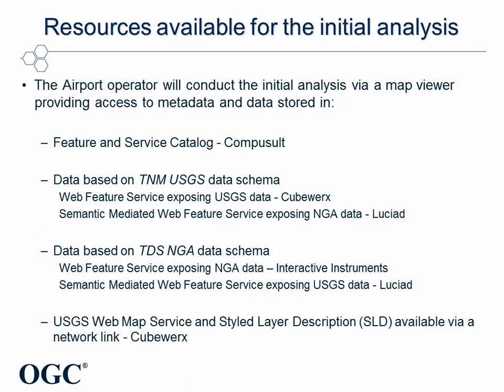The airport operator will, through the map viewer, have access to the following components: the feature and service catalog provided by ComboSalt; the data based on the National Map USGS data schemas, in particular the web feature service exposing USGS data provided by Q-Works, and the semantic mediated web feature service exposing NGA data provided by LUCIAD; the data store based on topographic data store NGA data schema, in particular the web feature service exposing NGA data provided by Interactive Instruments and the semantic mediated web feature service exposing USGS data provided by LUCIAD; and finally the USGS web map service and style layer description made available via network links by Q-Works.